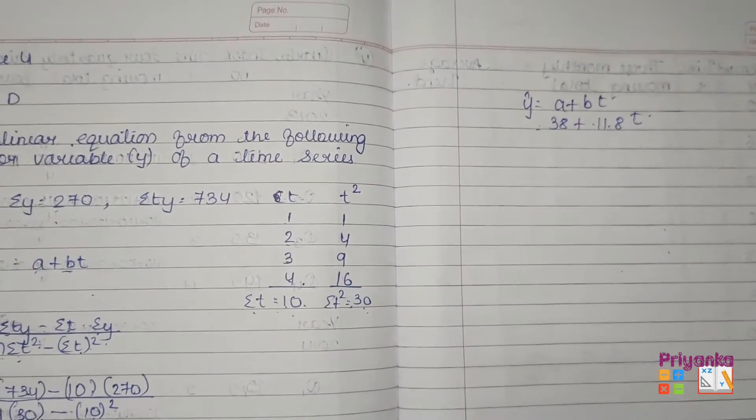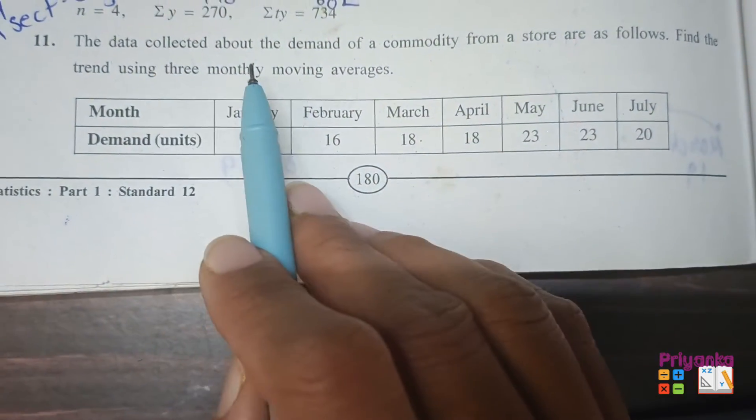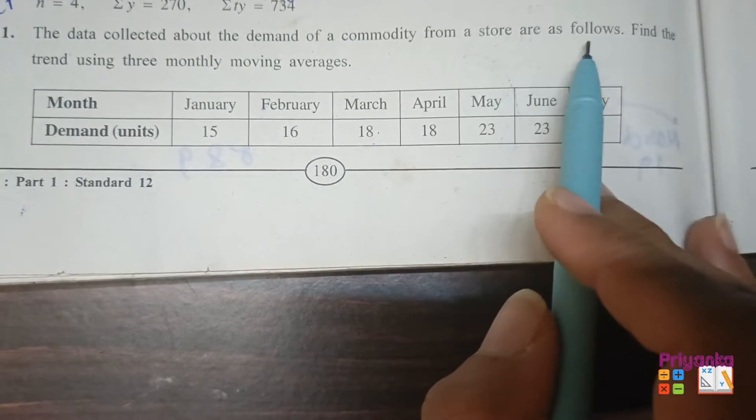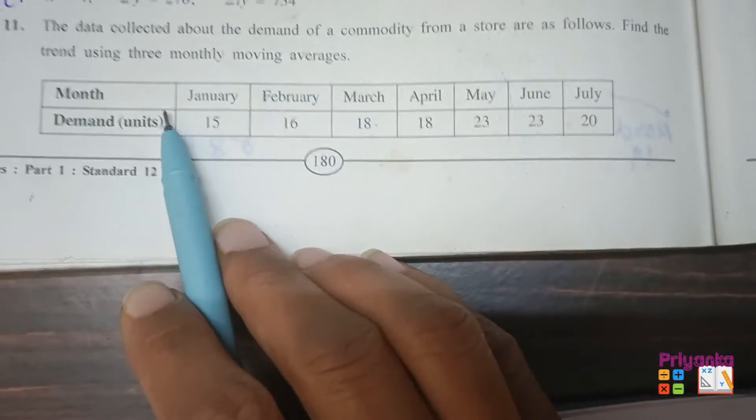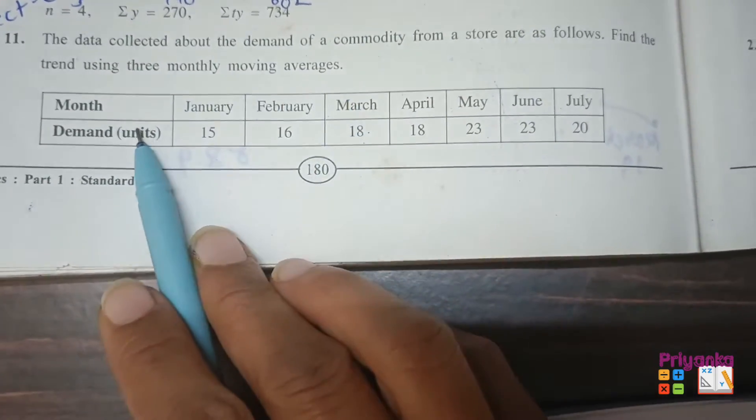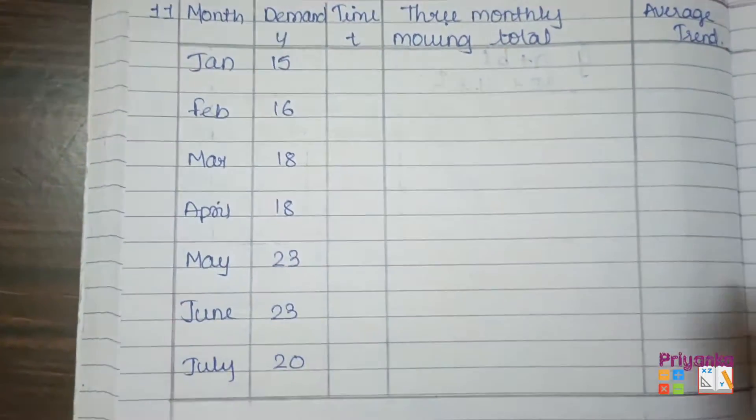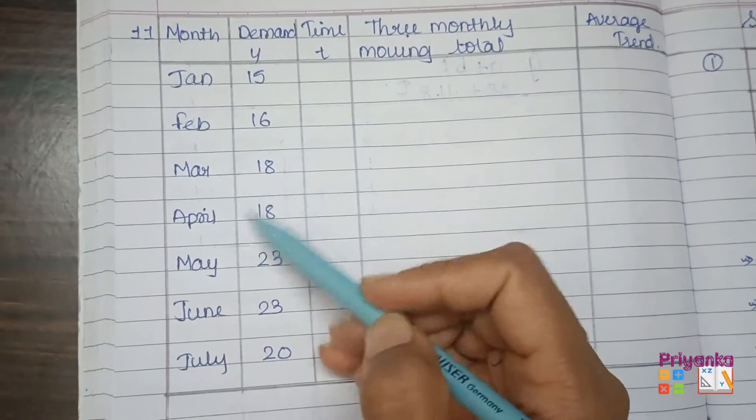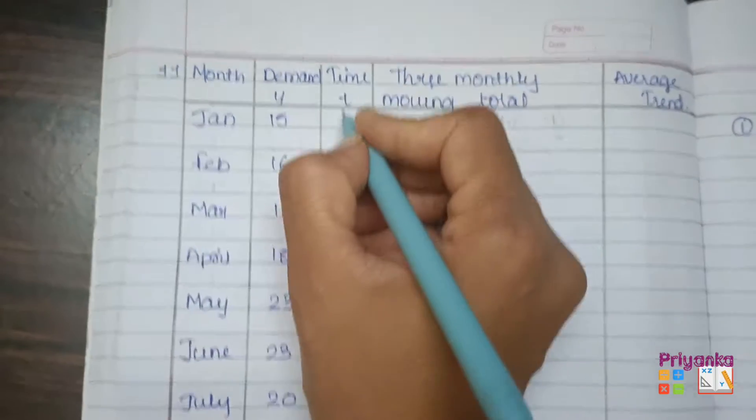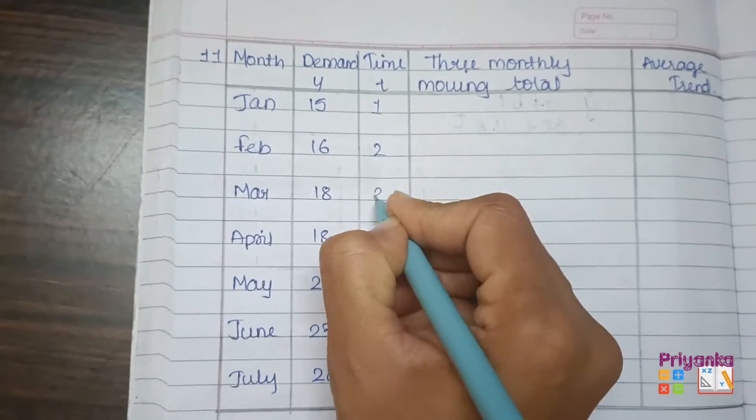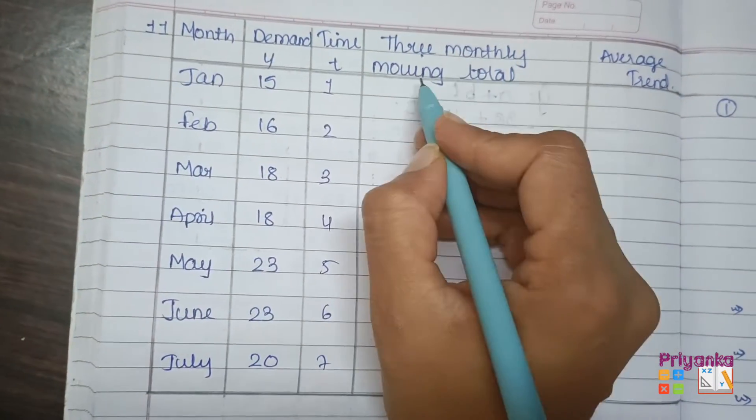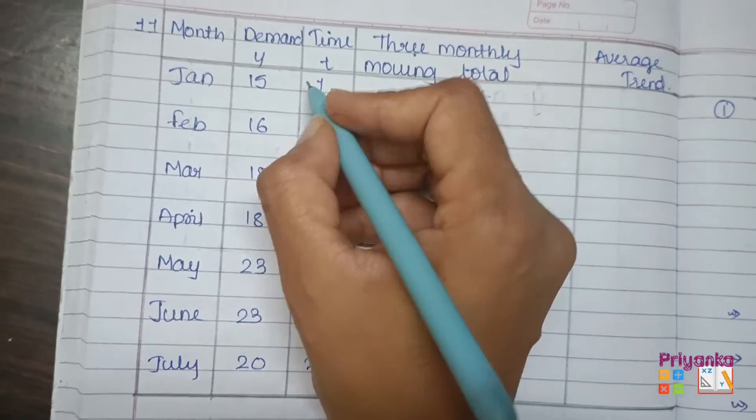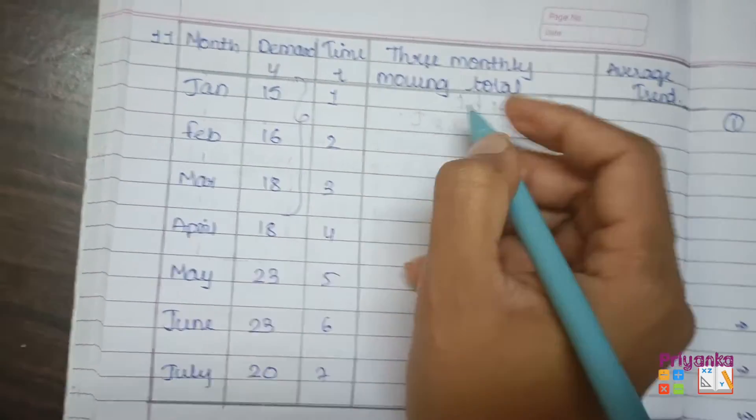Moving to the next question, question number 11: the data collected about the demand of a commodity from a store are as follows. Find the trend using the monthly moving average. So here three monthly moving average we are going to use. Take the month and demand. All three methods has been done in section D. Here I kept the month, demand, time is just ascending numbers 1, 2, 3, 4, 5, 6, 7. Now for the three monthly moving total, we just need the set of three.